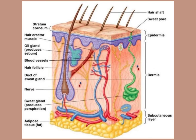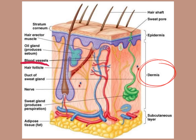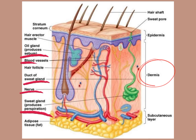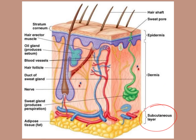Let's revise what we have studied about the skin. The first layer is the epidermis, with the stratum corneum as its outer layer composed of keratinized cells. The dermis contains blood vessels, nerves, sweat glands that secrete sweat, sebaceous or oil glands that secrete sebum, hair erector muscles involved in the goose bump, and hair follicles. The subcutaneous layer, also called hypodermis, contains adipose tissues to keep the body warm.